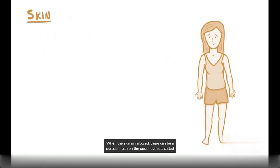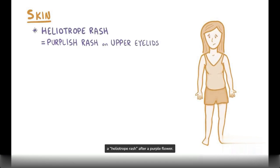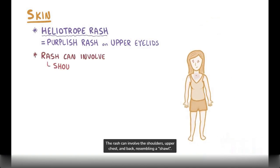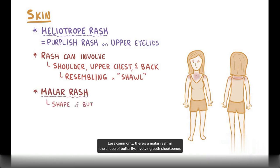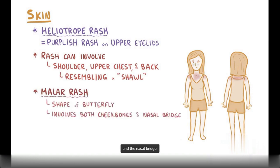When the skin is involved, there can be a purplish rash on the upper eyelids, called a heliotrope rash, named after a purple flower. The rash can also involve the shoulders, upper chest, and back, resembling a shawl. Less commonly, there's a malar rash in the shape of a butterfly involving both cheekbones and the nasal bridge.